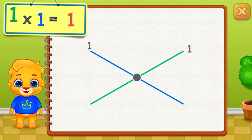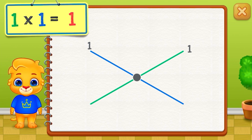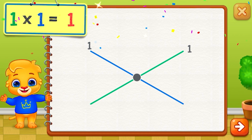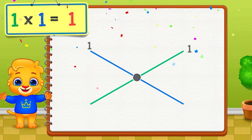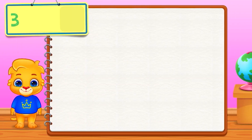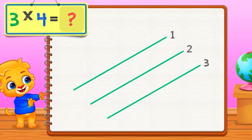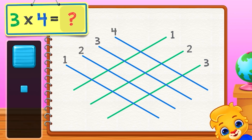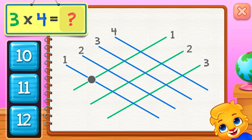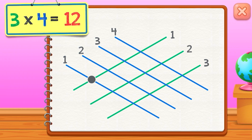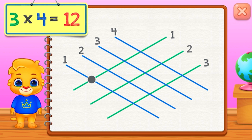1 times 1 equals 1. 3 times 4 equals... 12. 3 times 4 equals 12.